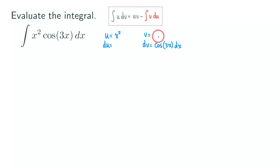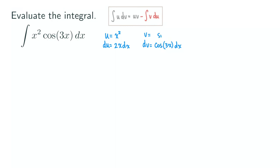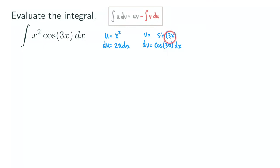Now we need to find du and v. Because u is x squared, taking the derivative using the power rule gives us du = 2x dx. For the antiderivative of cosine 3x, we know the antiderivative of cosine is sine, so v = sine 3x. But due to the chain rule, differentiating sine 3x gives a factor of 3, so we multiply by the reciprocal, one-third. Therefore v = one-third sine 3x.